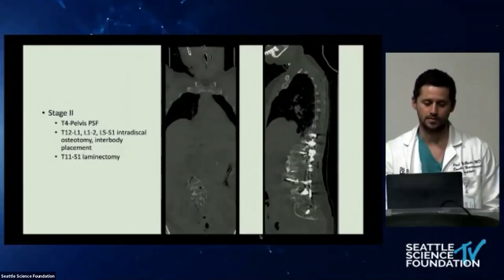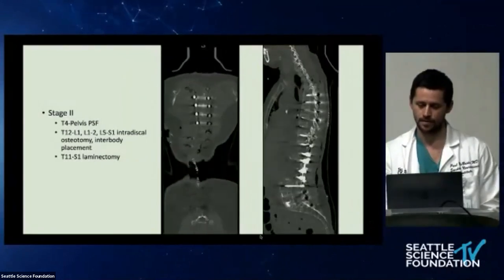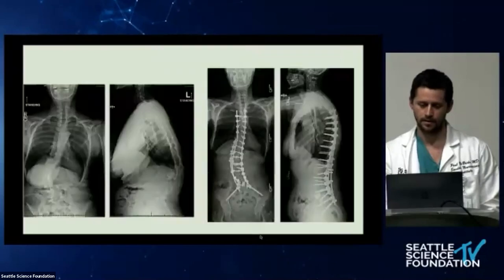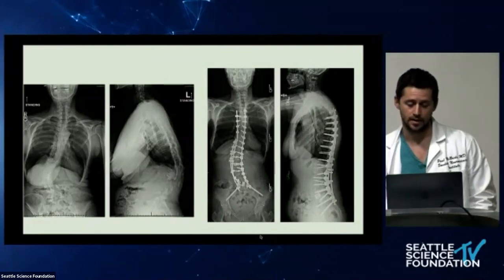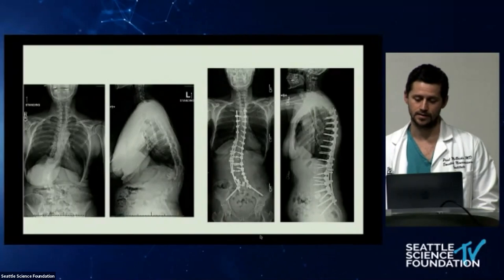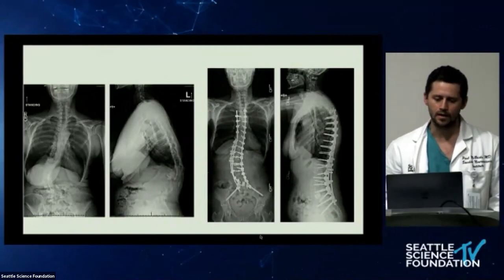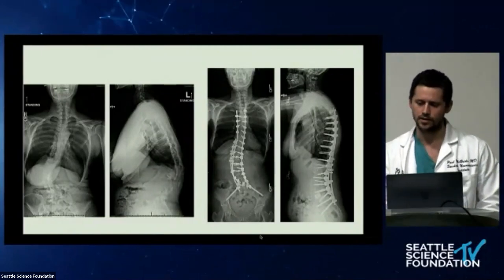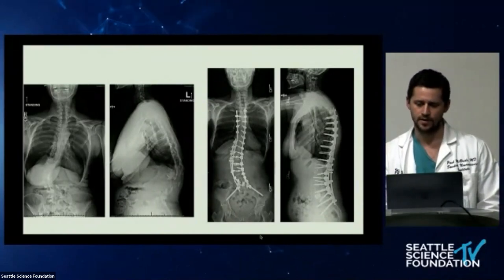CT scan obtained after the standing x-rays showed windshield-wipering of the S1 screws bilaterally as well as the right L5 screw. Comparing initial post-op images, there's some loss of SVA and loss of lumbar lordosis. Chapman asks whether the iliac screws were closed islet screws or regular tulip top-loading screws. Paul clarifies they were specialized reinforced open-head tulip screws — stronger flanges than conventional — but not a locked pelvic screw.